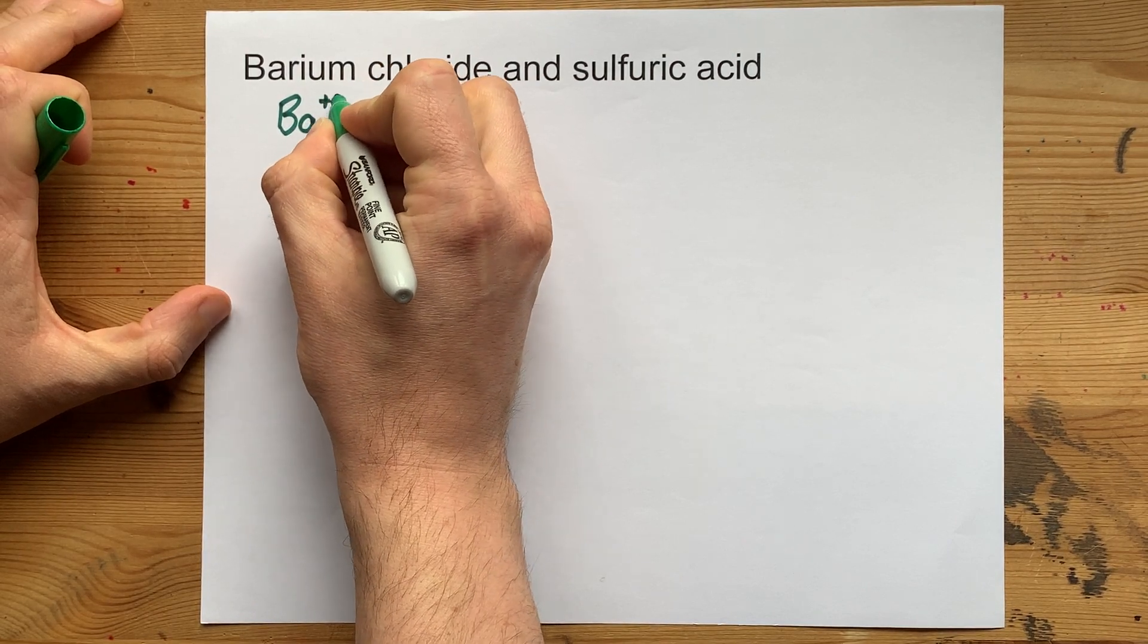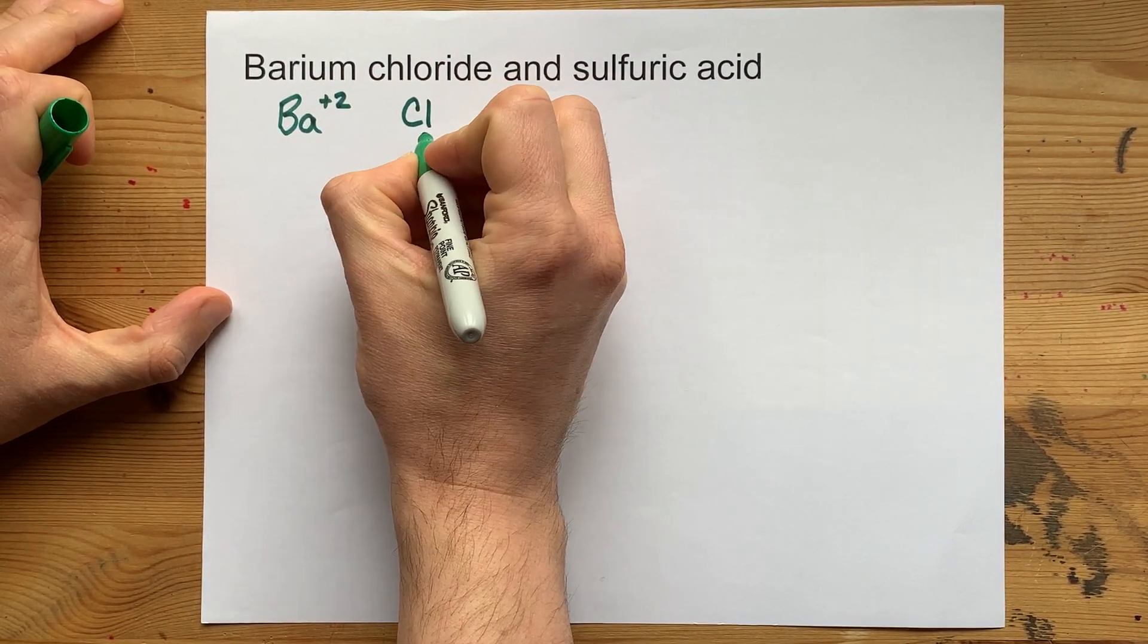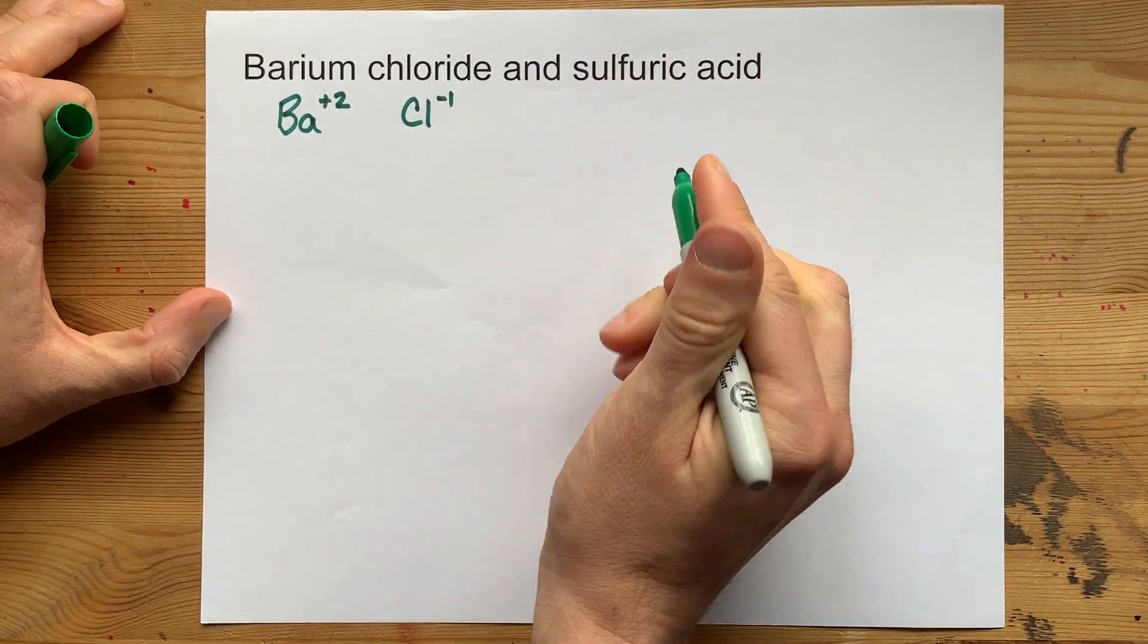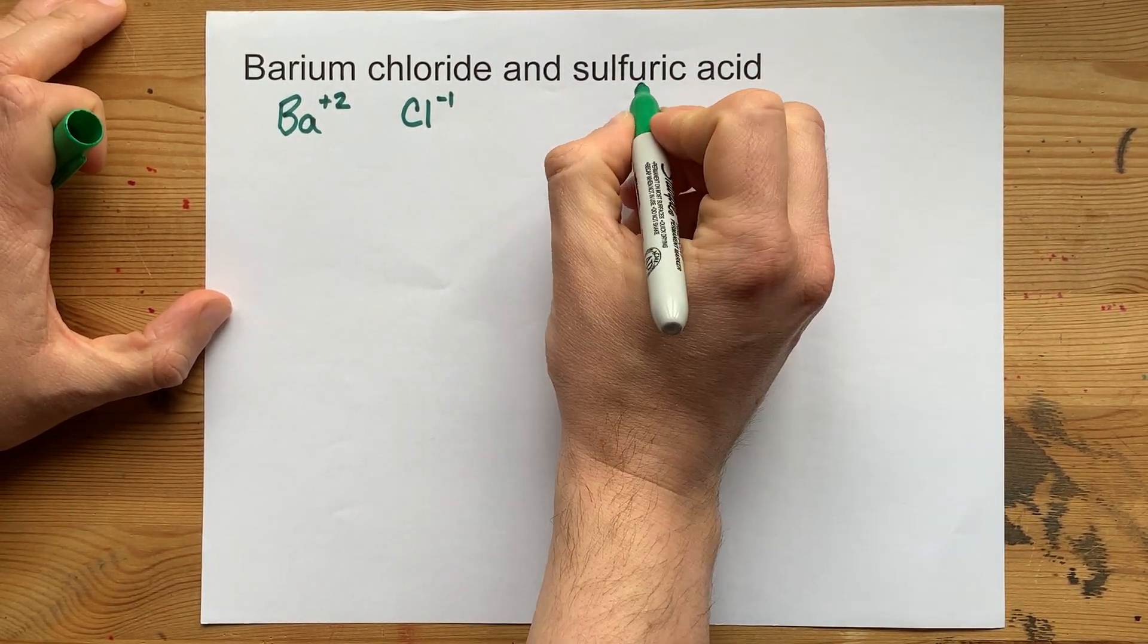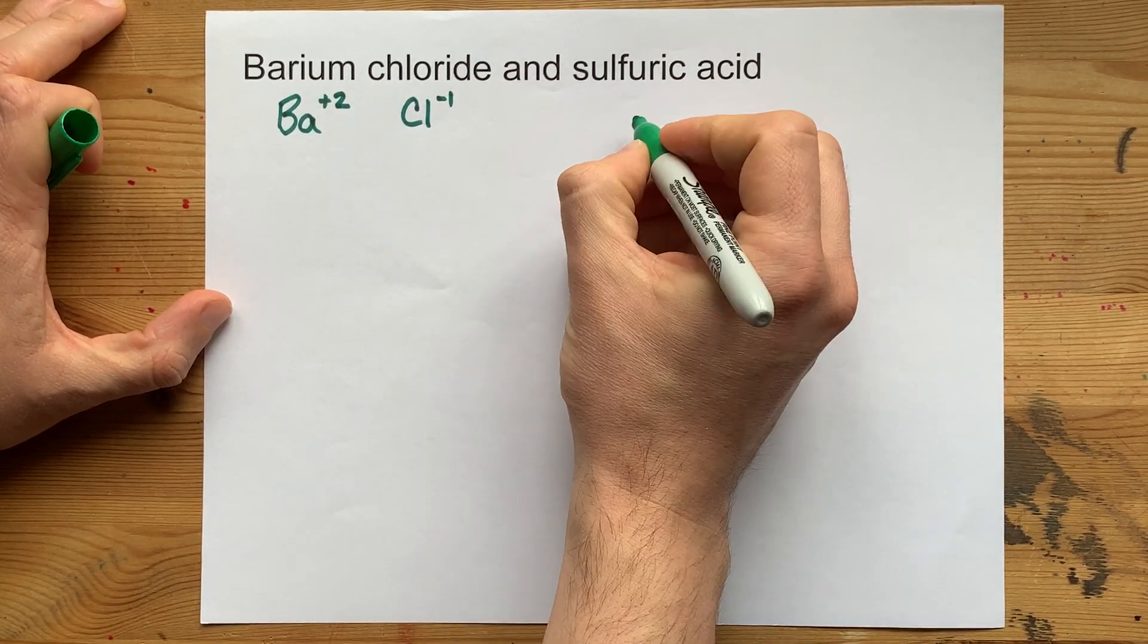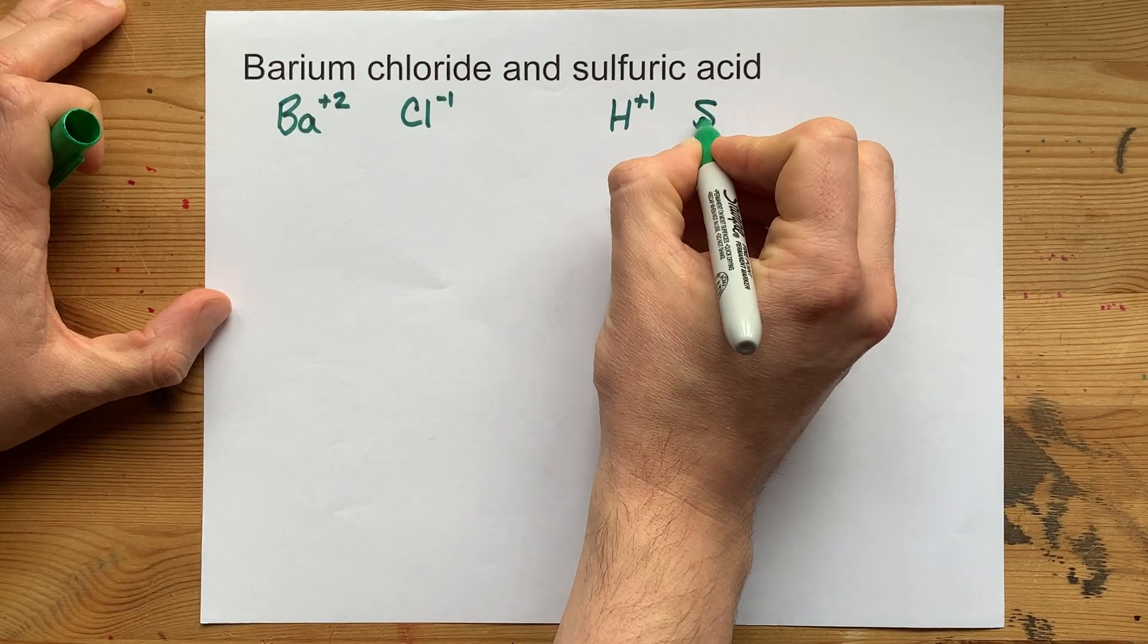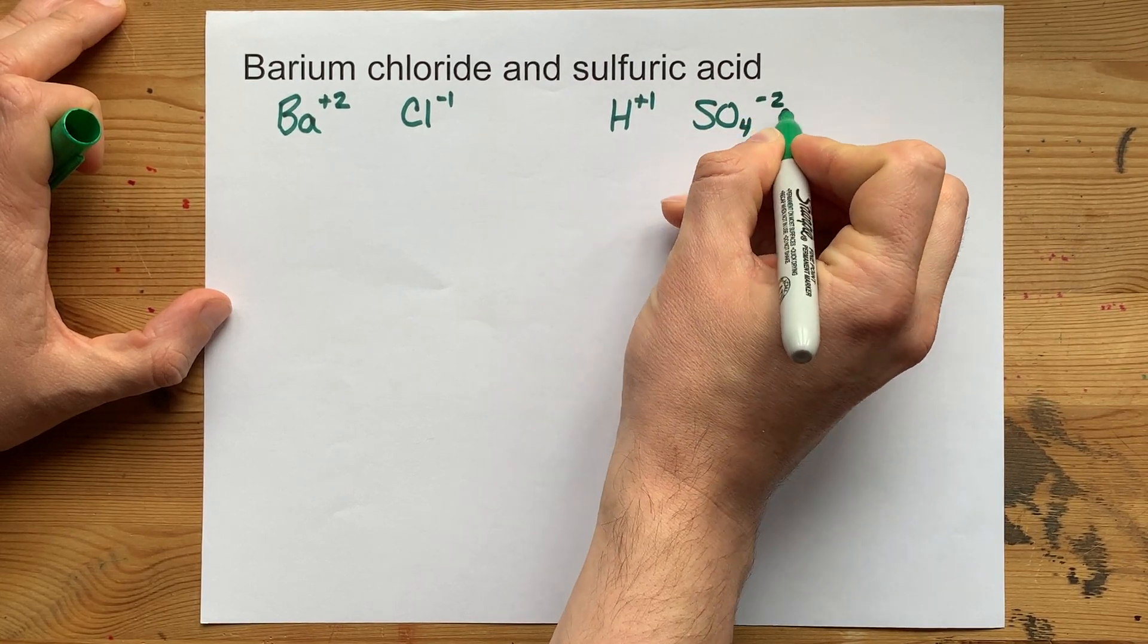I'm going to show you the ions that each of these ionic compounds are made out of. Barium is a metal that likes having a plus two charge. Chlorine is a non-metal that likes having a minus one charge. Sulfuric acid is hydrogen bonded to the sulfate ion. That means you have H+ and SO₄²⁻.